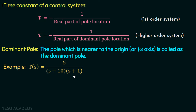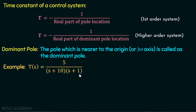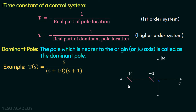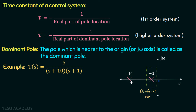If we want to define the overall time constant for this transfer function, we consider the real part of the dominant pole location. If we plot these two poles in the pole-zero diagram, s = -1 is the dominant (significant) pole and s = -10 is called the insignificant pole.